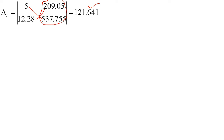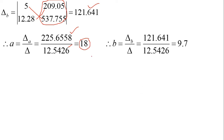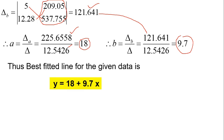Substituting these values: a = Δa / Δ = 18, and b = Δb / Δ = 121.641 / 12.5426 = 9.7. Finally, substituting the values of a and b into equation 1: y = a + bx becomes y = 18 + 9.7x. This is the required equation of the straight line fitted to the given data. In this way, we can solve more examples for fitting of straight lines.